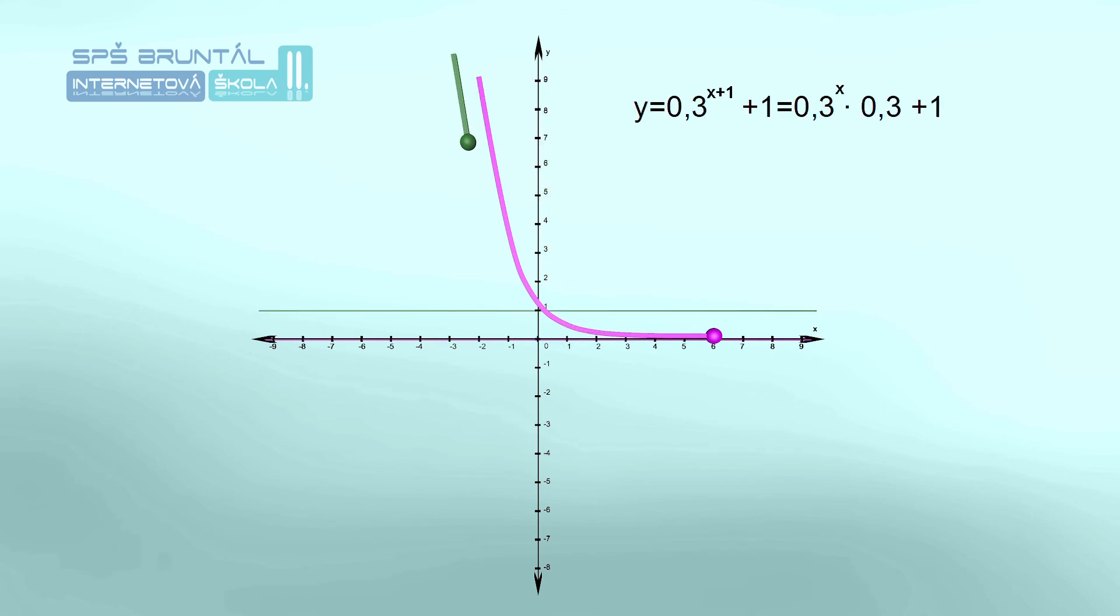A máme tu poslední graf. Jeho zadání je po úpravě y rovná se 0,3 na x tou krát 0,3 plus 1. Na ose y se blíží k jedničce, tam je asymptota a protíná ji v bodě 1,3. Definičním oborem jsou všechna reálná čísla. Oborem hodnot je interval otevřený od jedničky do nekonečna.